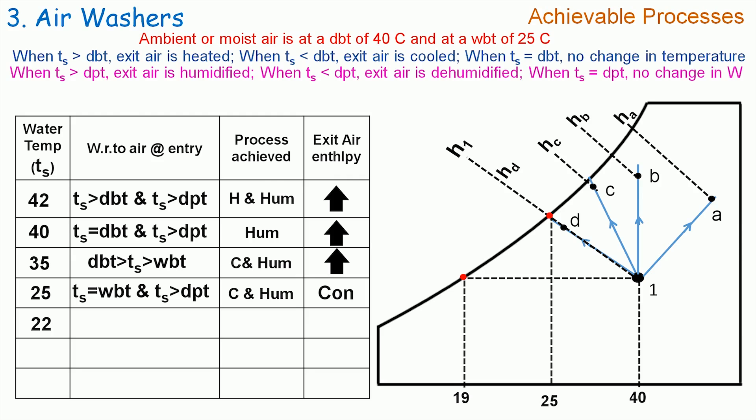Let us now supply the spray water at 22°C. Here TS is less than the dry bulb temperature, hence air is cooled. And TS is greater than the dew point temperature, hence air is humidified. Therefore, the achievable process by the air washer is cooling and humidification. But please note that the spray water temperature TS is less than wet bulb temperature here. If you plot it on the psychrometric chart, then process 1E will be representing it. The enthalpy HE is less than H1, hence exit air enthalpy decreases in this case.